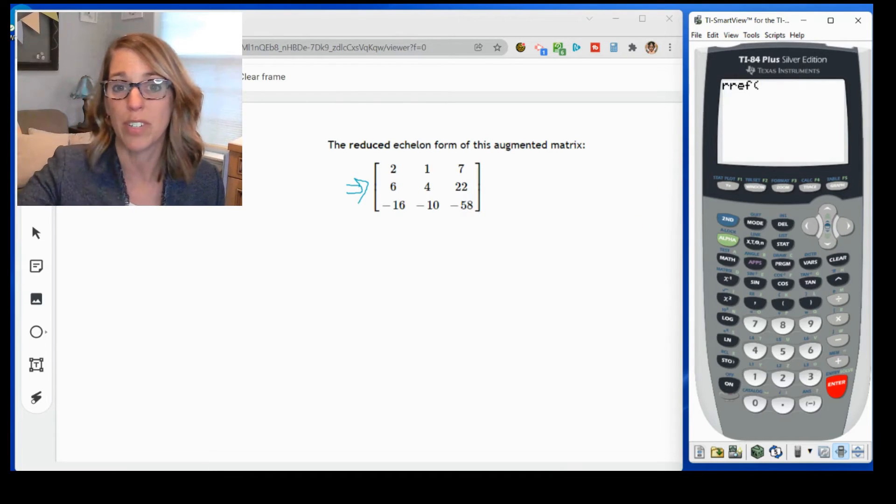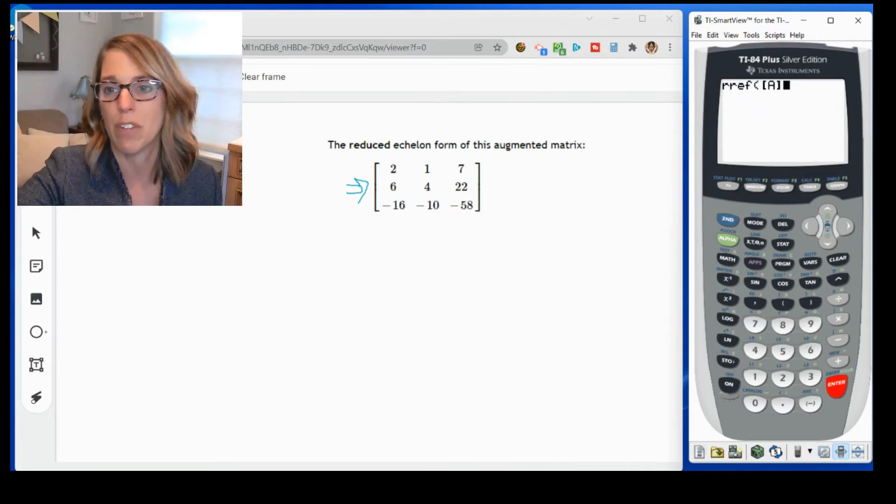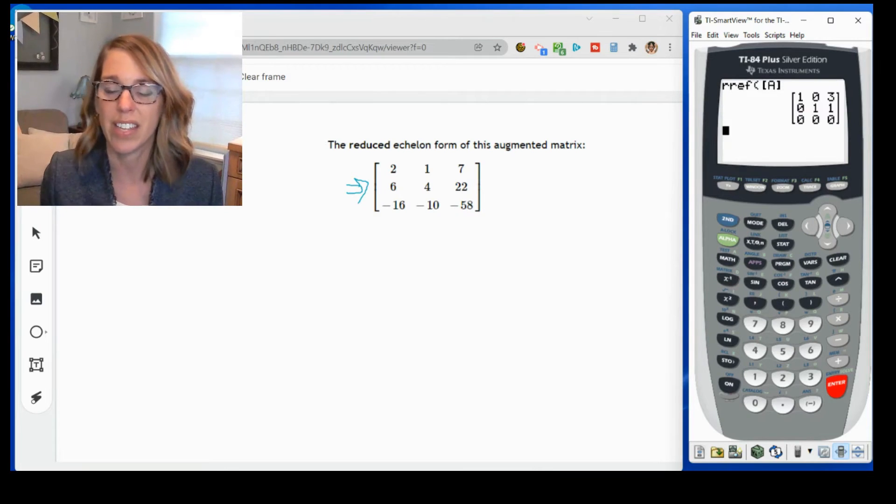I hit enter, and it's waiting for my matrix name. So I'm going to go second, and then matrix, which is my x to the negative one key. This time I want to grab the matrix name, which is that matrix A, and then I hit enter.